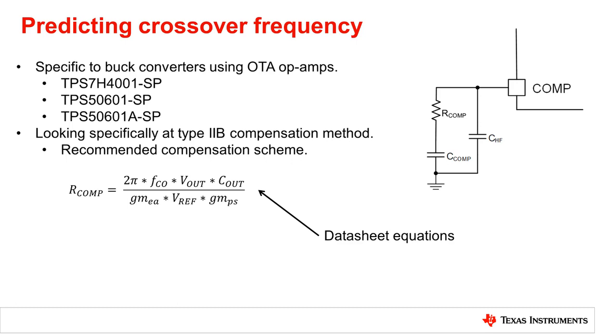The first datasheet equation to look at is the R-comp resistor. This equation comes from the predicted gain at the desired crossover frequency and is used to place the gain of the frequency response to get the desired crossover frequency.